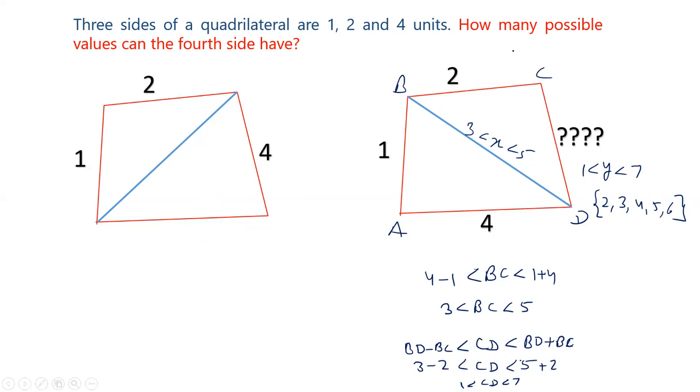This way we see the answer to this question is 5 values are possible: 2, 3, 4, 5, 6. Any case you take, any order of the length of the sides, the number of possible cases are 5.